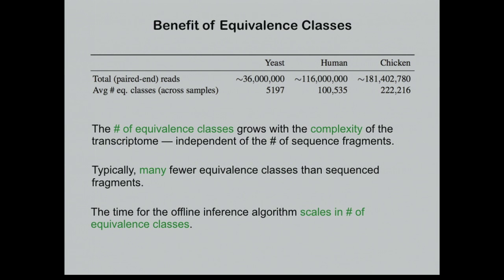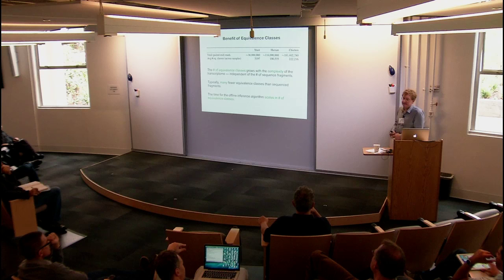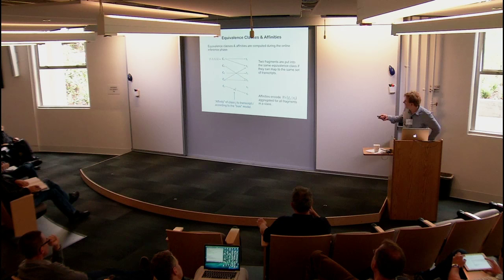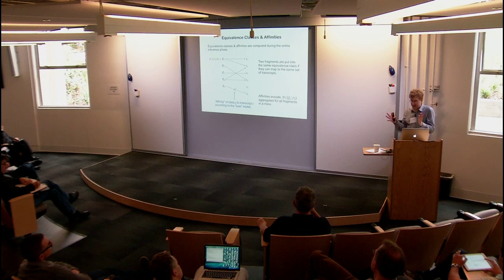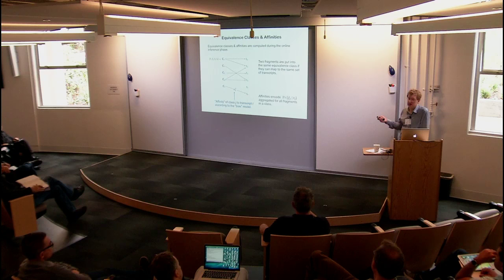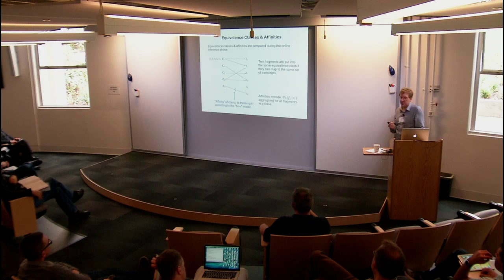Question: Within an equivalence class, different reads may still have different probabilities of being generated from different transcripts — how do you deal with this? Answer: In the online model, we're optimizing the full model without any collapsing of these individual probabilities. In the offline model, we approximate these individual probabilities by the average probability over the fragments in the equivalence class. Empirically this seems to work really well, though the model may not be exactly the same.